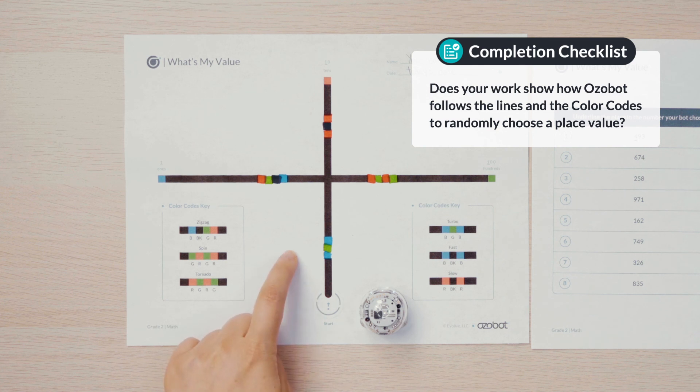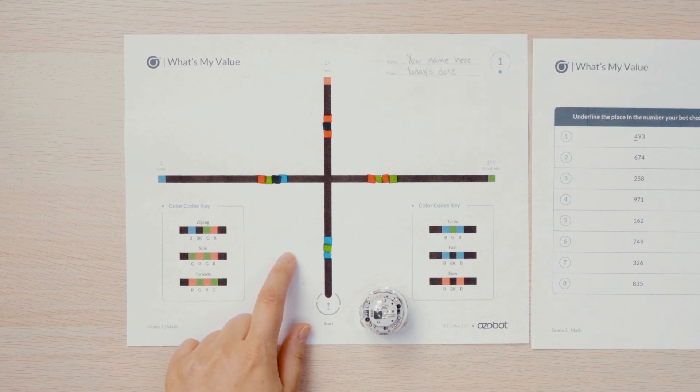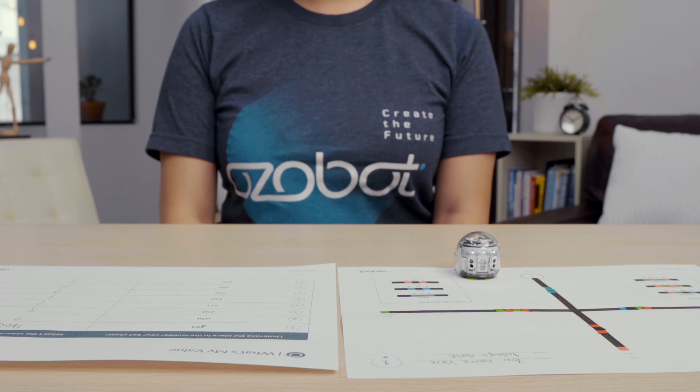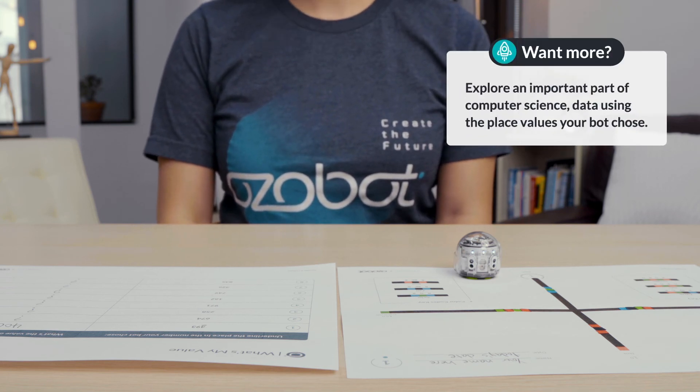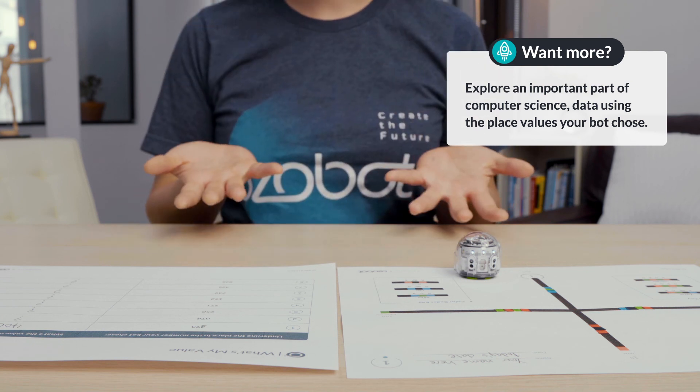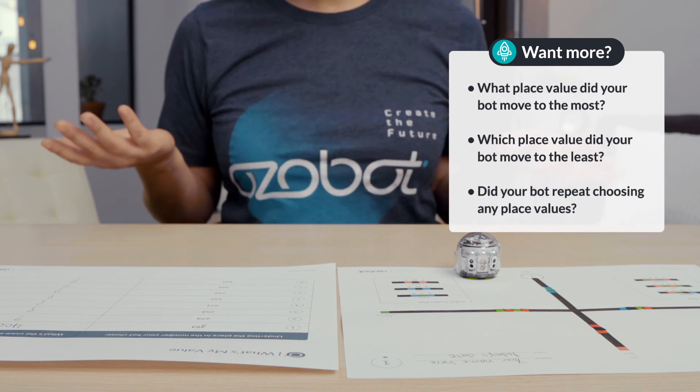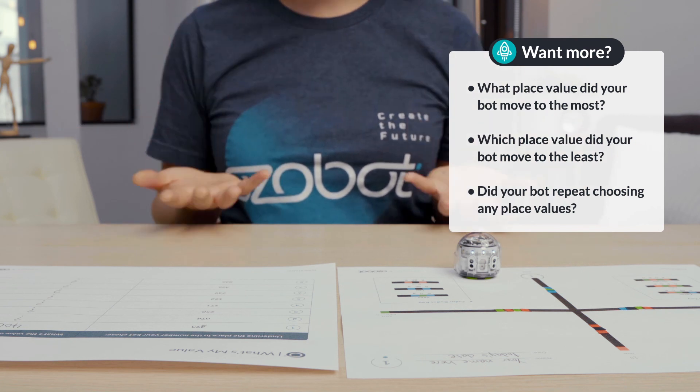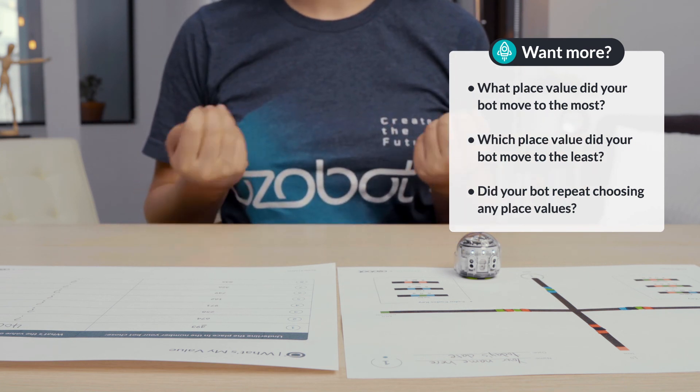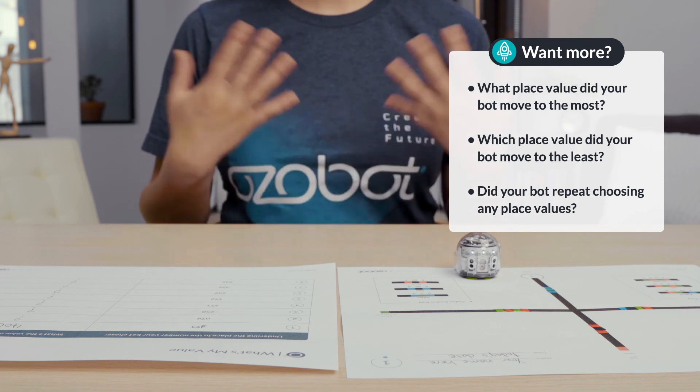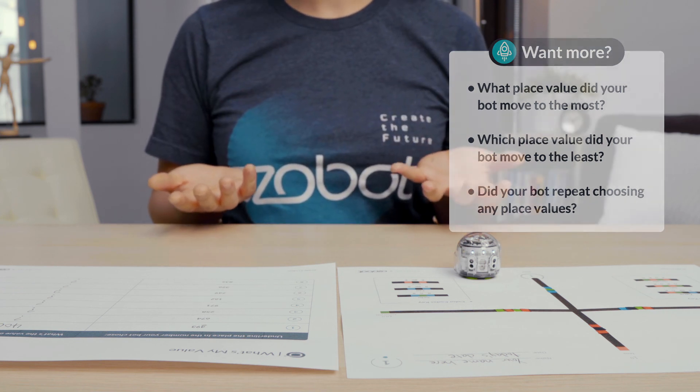If you're looking for more, explore an important part of computer science: data, using place values your bot chose. What place value did your bot move to the most? Which place value did your bot move to the least? Did your bot repeat choosing any place values?